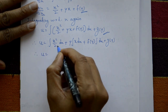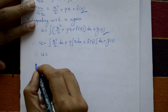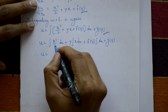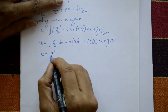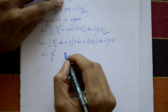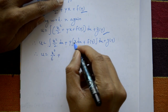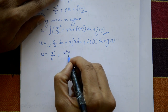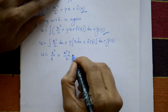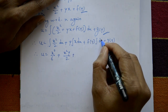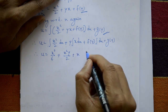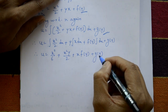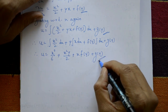Now integrate each term: 1/2 is constant, integration of x² gives x³/3, so together that is x³/6. Then y is constant and integration of x is x²/2, giving x²y/2. Plus f(y) times integration of 1 is x, giving xf(y). Plus g(y). Therefore the required solution is u = x³/6 + x²y/2 + xf(y) + g(y).